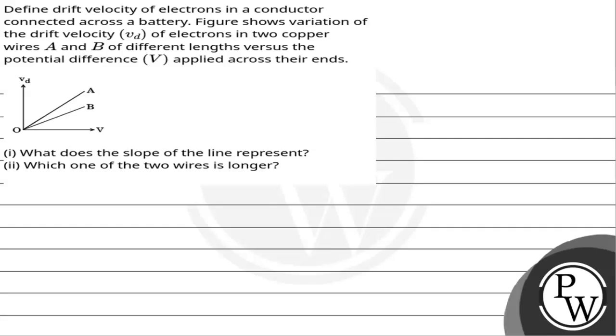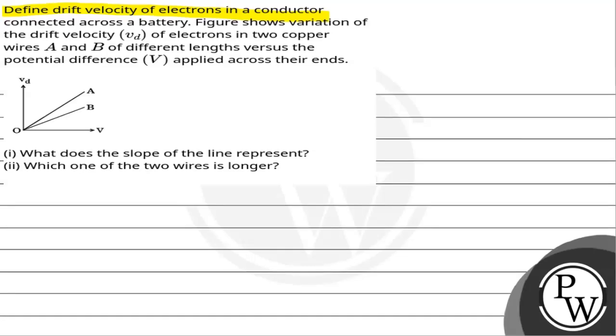Hello, let's read this question. The question says: define drift velocity of electrons in a conductor connected across a battery. The figure shows variation of the drift velocity vd of electrons in two copper wires A and B of different lengths versus the potential difference V applied across their ends.